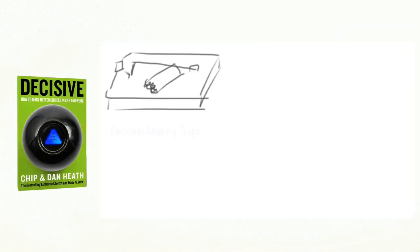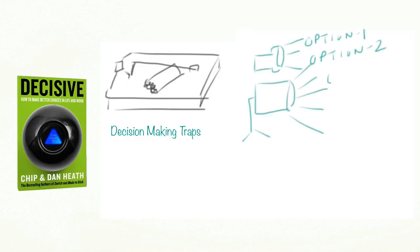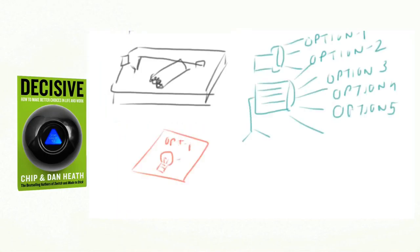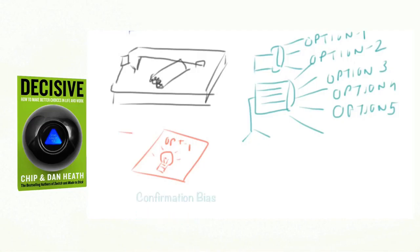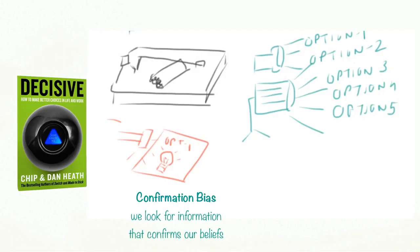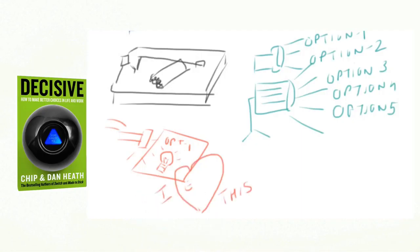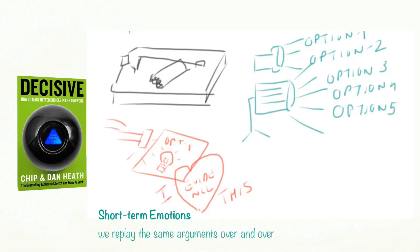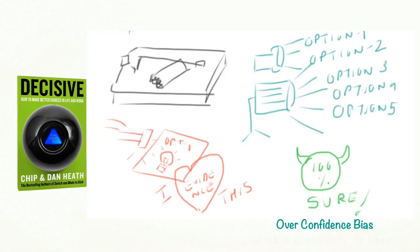In their book Decisive, Chip and Dan Heath explain the four key decision making traps. First, we look for options with a spotlight and not a searchlight, so we end up with very few options and sometimes only whether or not decisions. Within this narrow frame of options, our confirmation bias makes us look for information that supports our biases, assumptions and prejudices. Then our short term emotions kick in and we replay the same arguments in our head. Finally, overconfidence bias makes us believe that we know how the future will play out.